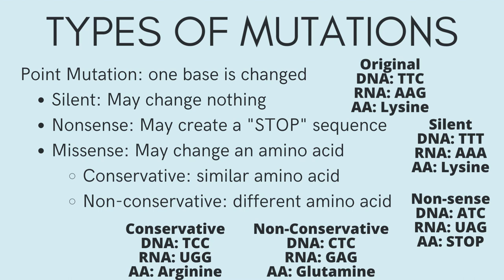There are point mutations which occur when one base is changed in the sequence. This type of mutation includes the subtypes silent, nonsense, and missense. A silent mutation means that the mutation does not cause a change in the overall amino acid — for example if the original DNA codes for lysine, and the mutation also codes for lysine, then the mutation does not actually change anything. In the case of a nonsense mutation, the mutation codes for a stop codon, which creates a short protein chain, and is the most disruptive point mutation. A missense mutation causes the amino acid to change, and this may be either conservative or non-conservative. A conservative mutation means that the amino acid it changes to is similar to the original amino acid, and that the mutation may not create a change at all. A non-conservative mutation causes a drastic change to the type of amino acid produced, which may completely change the structure of the protein.